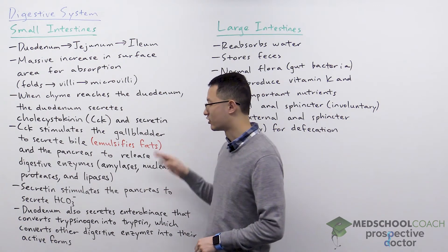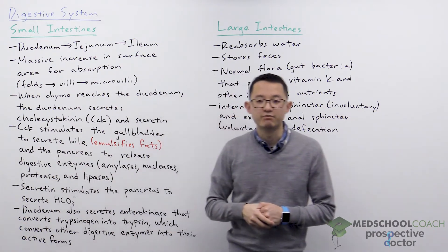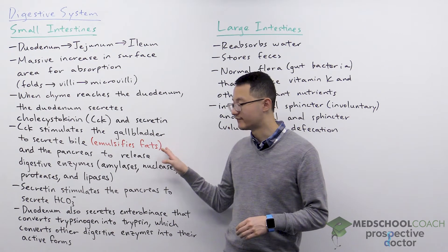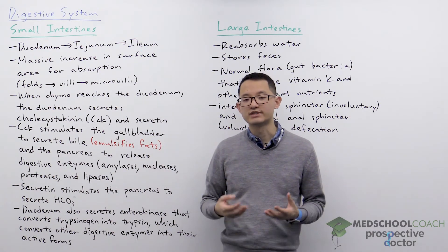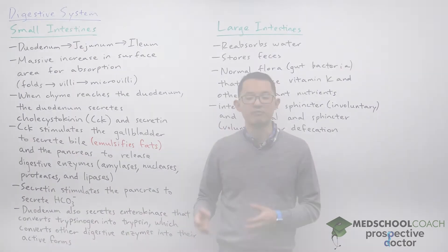CCK will act on the gallbladder to secrete bile. Bile has an important role of emulsifying fats. You can see how that works in this diagram. Bile is a salt, and these salts are amphipathic molecules that will take large globules of fats and break them down into smaller globules of fats. This significantly increases the rate at which fats can be broken down by the body.